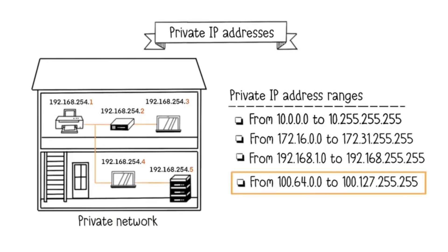There's also another unique range of IP addresses. These are routable IP addresses on the Internet, but are used as private addresses for internal use by Internet service providers for large-scale NATs. NAT stands for Network Address Translation, which involves translating IP addresses into other IP addresses. I won't go into details here as I have a dedicated video on this topic. In any case, these are reserved private IP addresses.